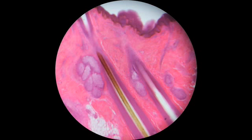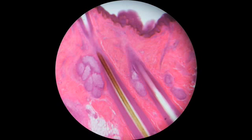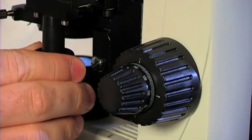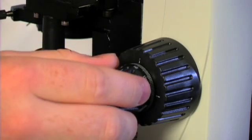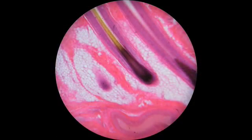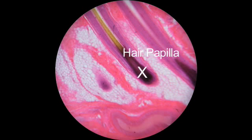Students may be interested to know that the sebaceous gland is involved in acne. Here we see a hair shaft, and in many sections you'll see that the hair shaft extends out from the skin. We can translocate to a different section of the slide deeper than the dermis to see the subdermal structures, including the hair papilla, which is the part of the hair that actually grows at the root.